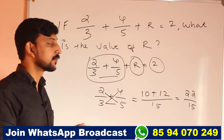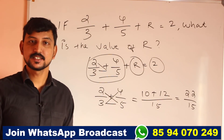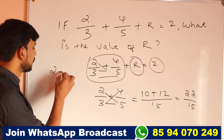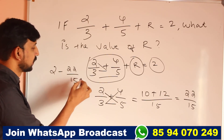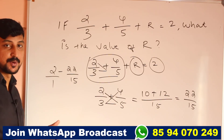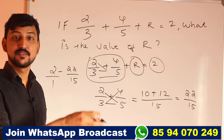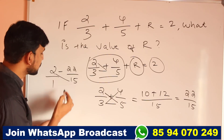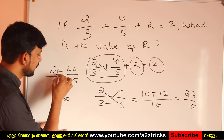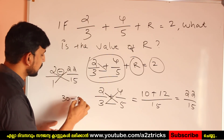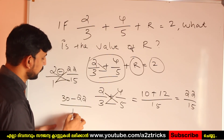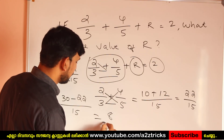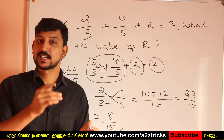Then 22/15 — we have to add these two things. So r equals 2 minus 22/15. We write 2 as 2/1, which is 30/15. Then 30/15 minus 22/15 equals 8/15. So the answer is r equals 8/15.